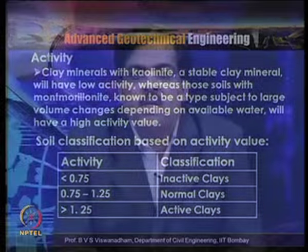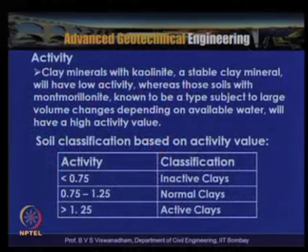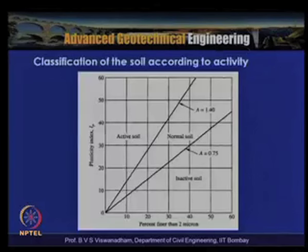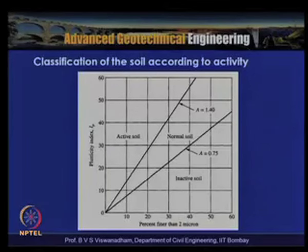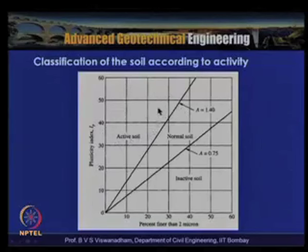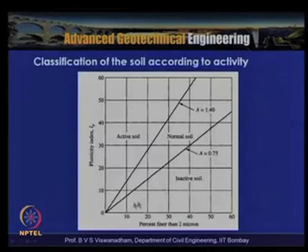Soil classification can also be made based on ranges of activity values. When activity is less than 0.75, the soil is classified as inactive; 0.75 to 1.25 as normal clay; and greater than 1.25 as active. Graphically, on a plot of plasticity index (y-axis) versus percent finer than 2 micron (x-axis), soils with high activity values are potentially susceptible to expansive nature, while kaolinite-type clays fall in the low activity region.